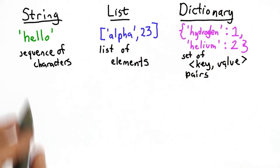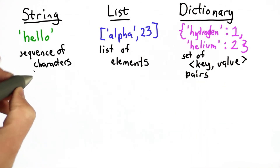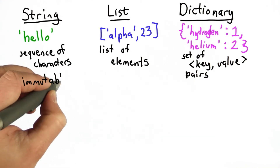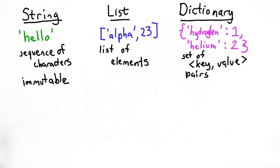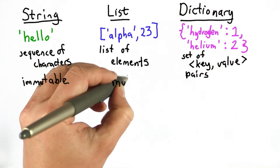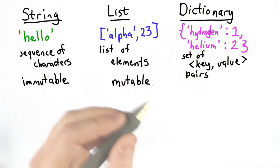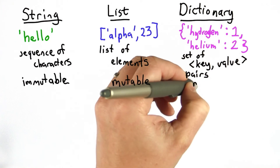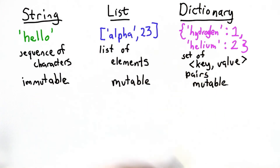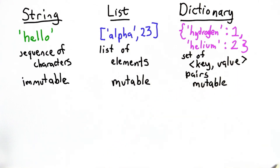One important property of all types is whether they're immutable or mutable. We saw that the string was immutable — that means once we create a string, we can't modify it; it has the same value it always has. A list was mutable; we could change the values of elements in the list, and after we create the list, we could append to it, adding new elements. A dictionary is also mutable, so after we create a dictionary, we could add new key-value pairs to it and change the values associated with keys.